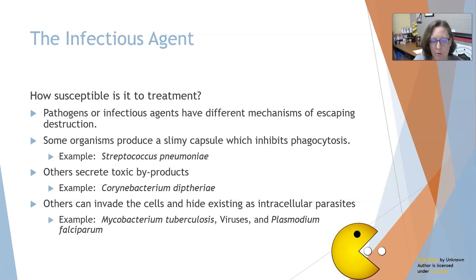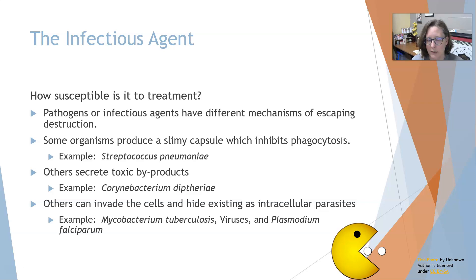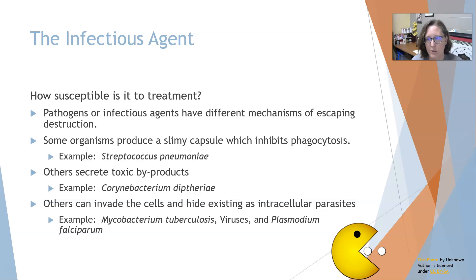Other organisms can secrete toxic byproducts, which cause problems with treatment and symptoms. Corynebacterium diphtheriae is one example. Others can invade cells and hide inside as intracellular parasites — they can hide inside white cells, or, like viruses, inside body cells — which makes it harder to reach them, because for viruses, once they're inside the cell, the whole cell has to be destroyed to destroy the viruses. For example, Mycobacterium tuberculosis can hide inside white cells, which then become a harbor for TB.